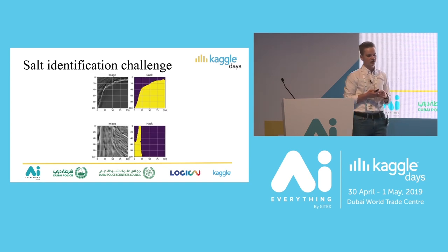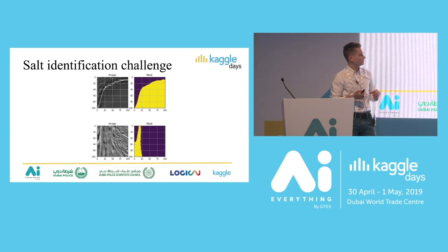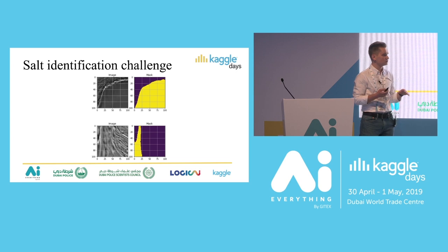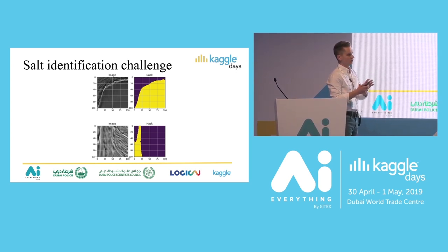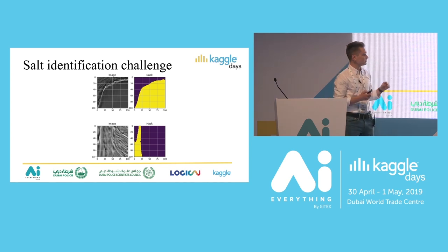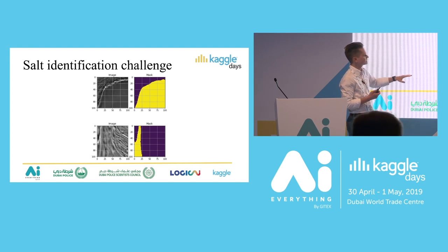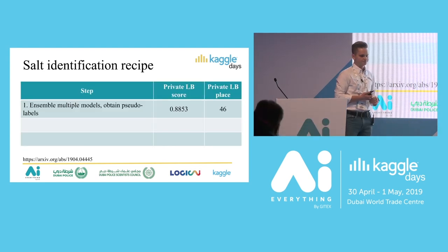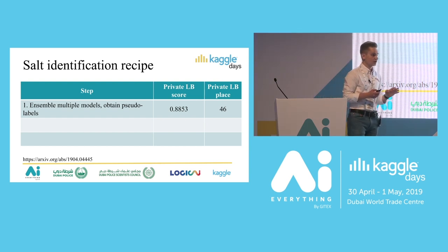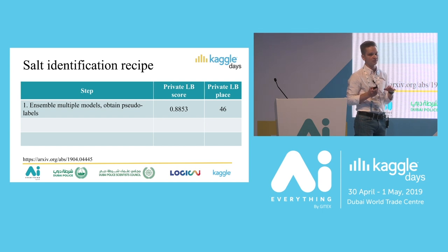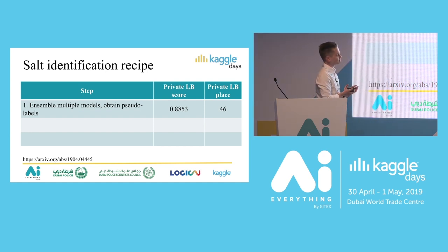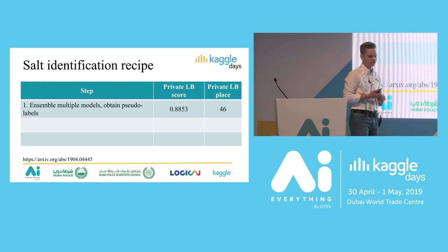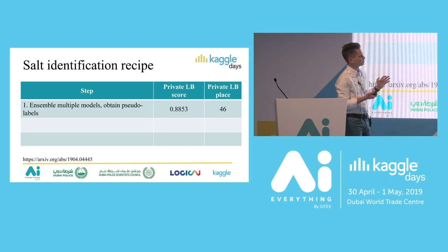The next example is the salt identification challenge, a semantic image segmentation problem. We were given seismic images of the subsurface, and each pixel was classified into two classes: salt or non-salt. The goal was to build a model that predicts salt deposit masks, as shown on the right. In this competition, the train data contained only 4,000 images while the test data contained 18,000 images — making it a perfect candidate for pseudo labeling due to the large difference between labeled and unlabeled data. Starting with multiple models trained and ensembled, we obtained pseudo labels and achieved 46th place.